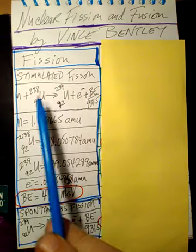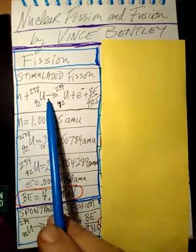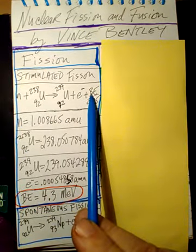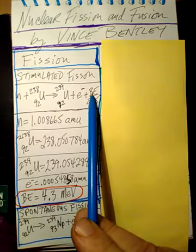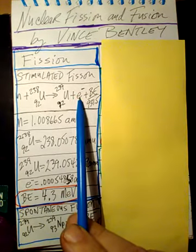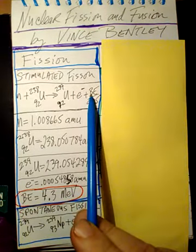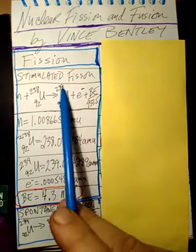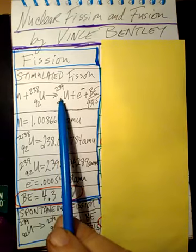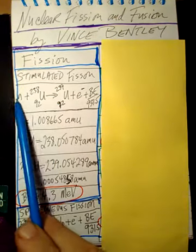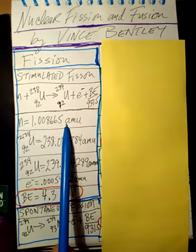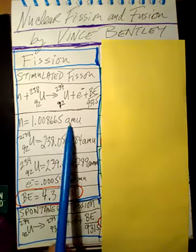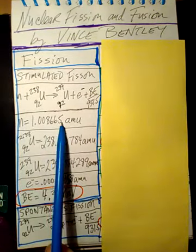We're going to calculate the binding energy — the extra energy that the electron will come out with. This is called the binding energy over 931.5, which just changes the units nicely. We'll need the neutron mass in atomic mass units (AMUs), which is this number right here.